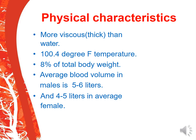What are the physical characteristics of blood? Blood is more viscous than water. Its temperature is 100.4 degrees Fahrenheit. It constitutes 8% of total body weight. Average blood volume in males is 5 to 6 liters and in females it is 4 to 5 liters.